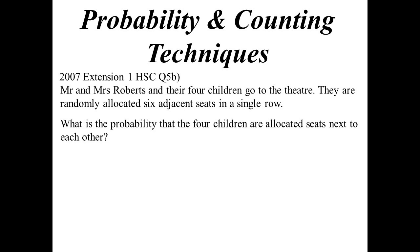2007, this one came from: Mr and Mrs Roberts and their four children go to the theatre. They're randomly allocated six adjacent seats, so they've gone to the box office, got six tickets in a row. What's the probability that the four children get allocated seats next to each other? Here's my answer. Now where does it all come from? Well, the bottom of the fraction, that's where no restrictions, that's where we put no restrictions.